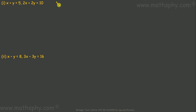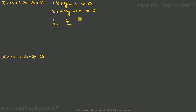For the first pair: x + y - 5 = 0 and 2x + 2y - 10 = 0. So a1/a2 is 1/2, b1/b2 is 1/2, c1/c2 is 1/2. All three ratios are equal — a1/a2 = b1/b2 = c1/c2 — so this gives consistent equations.